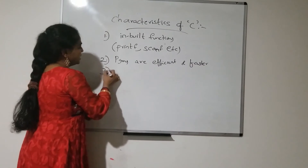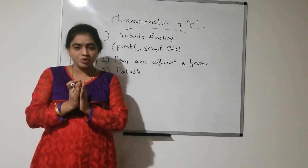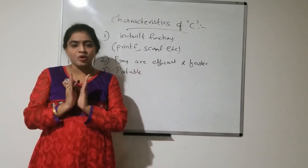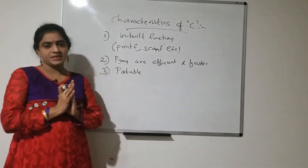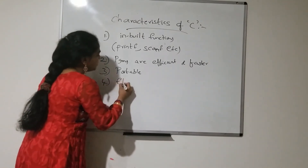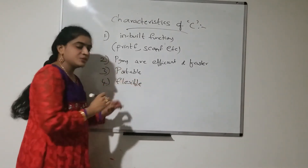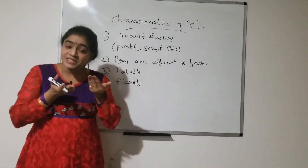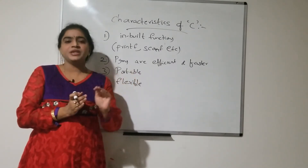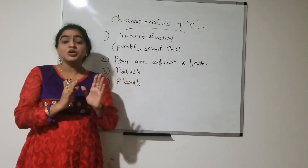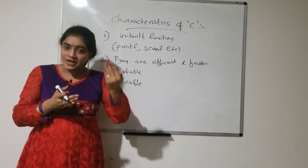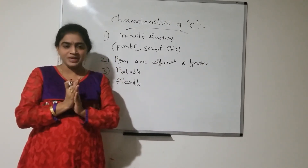The third characteristic is that C is a portable language. A C program written on one computer can run on another computer without any modifications — that is called portability. The fourth characteristic is that C is a flexible language. Flexibility means it is easy to understand, easy to read, and easy to develop — that is called flexibility, or being user friendly.